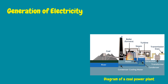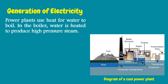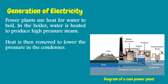This diagram of a coal power plant will tell us how generation of electricity takes place. Power plants use heat to boil water. In the boiler, water is heated to produce high-pressure steam. Heat is then removed to lower the pressure in the condenser.